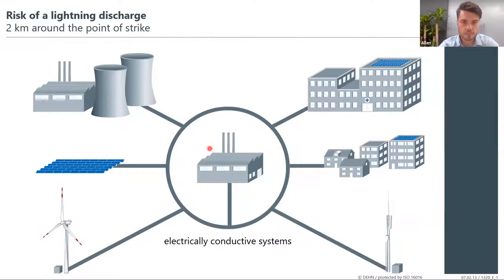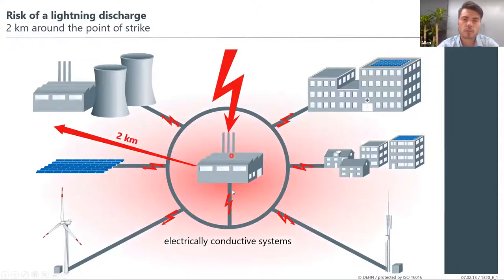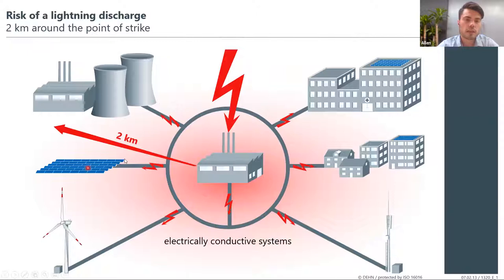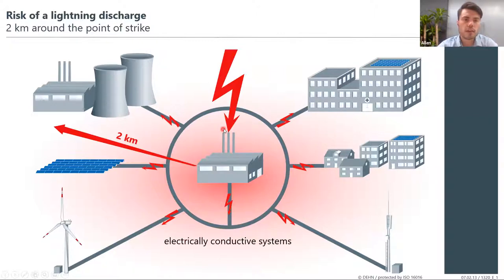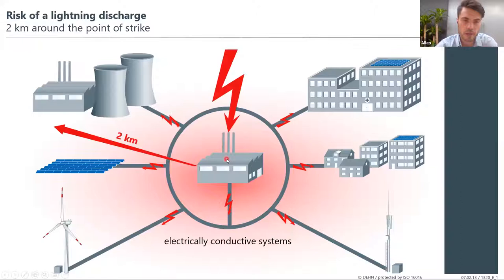The risks of a lightning strike — all systems are interconnected. Your power facility supplies hospitals, residential areas, cell sites, renewable energy sectors, and industrial facilities. A lightning strike doesn't have to happen at your premises to cause damage. It can happen at any part of the electrical installation, and due to the connected nature of electrical systems, the lightning current can travel back onto power lines into your buildings — defined up to two kilometers away.